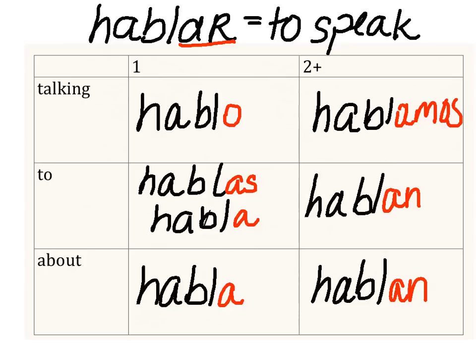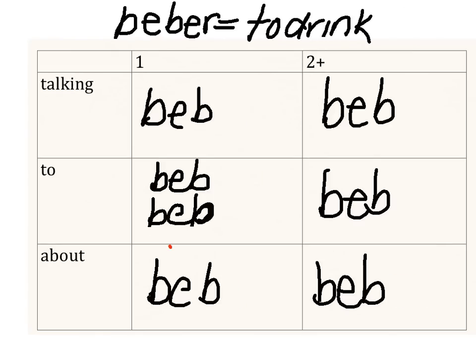So that's what we did with our verb that ended in AR. But today we're talking about verbs that end in ER or IR. So let's look at one — here is the verb beber. Our root, once we take off the ER, is 'beb,' and that's going to be the beginning of all of our conjugated forms.